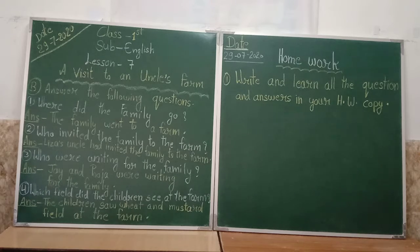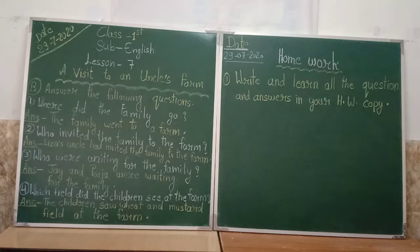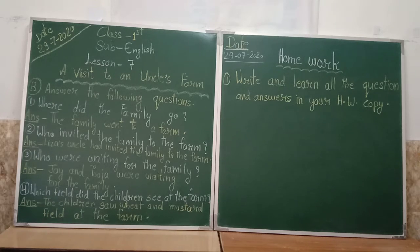Now kheton mein aapne dekha hoga, jo gaon mein rehte hain, kheton mein bahut saari fasal ugayi jaati hai aur unhi faslon se humare liye ana aata hai. Here we can see this farmhouse mein Puja aur Jay ke farmhouse mein kaun kaun si fasal lagi hai. Jahan pe barsaat ke dinon mein bahut saari fasal lagi hai, aur jab isme phool aane lagte hain toh iski sundarta bahut hi achi lagti hai dekhne mein. Aap log farm ke baare mein samajh hi gaye honge — field ke baare mein, kheton ke baare mein, jahan pe anek tarah ki fasal ugayi jaati hai.